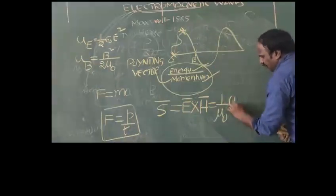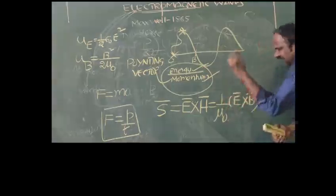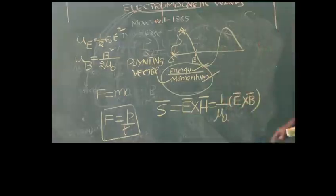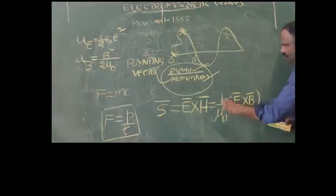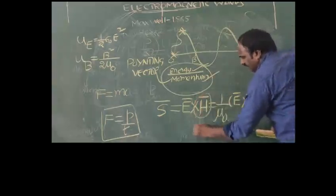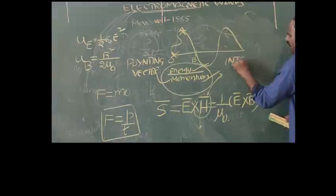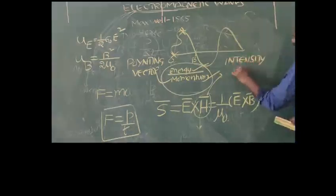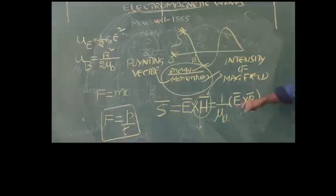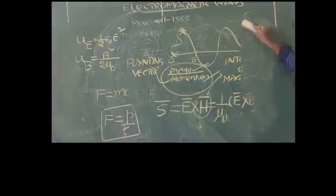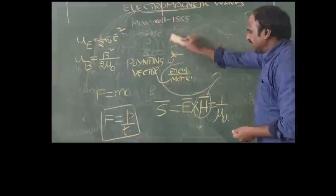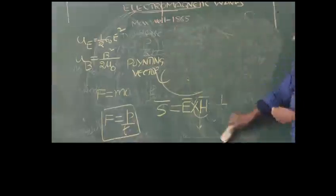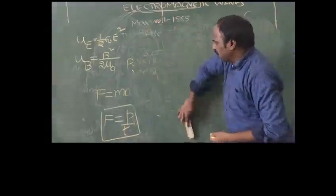The Poynting vector is given by S̄ = Ē × H̄ = (1/μ₀)(Ē × B̄), where Ē indicates electric field, B̄ indicates magnetic field, and H̄ is a new term called intensity of magnetic field. These are the important formulae related to electromagnetic waves, which explain how energy and momentum can be transferred from one point to another.